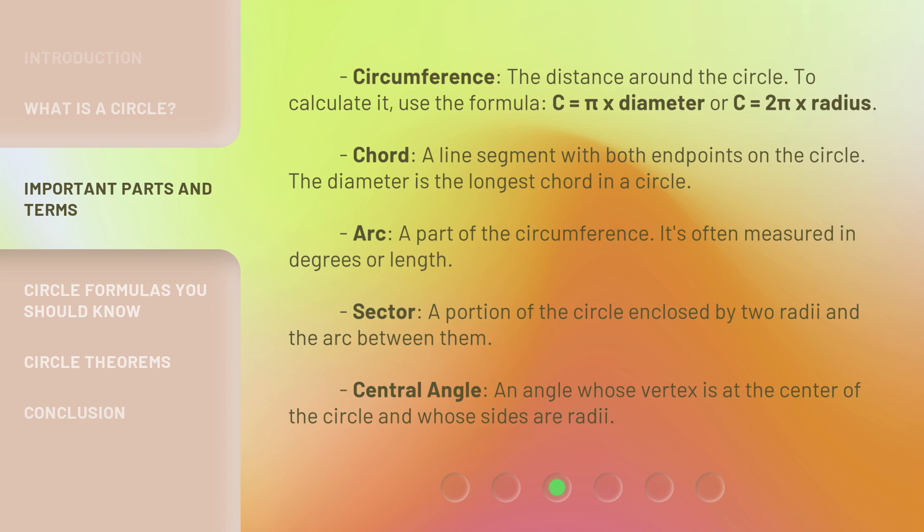Chord: a line segment with both endpoints on the circle. The diameter is the longest chord in a circle. Arc: a part of the circumference. It's often measured in degrees or length.